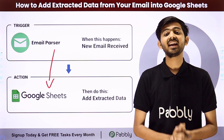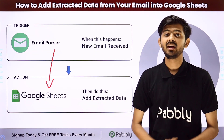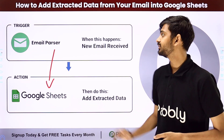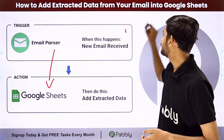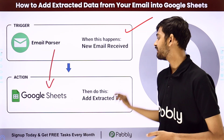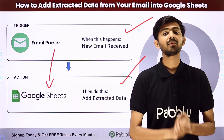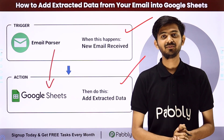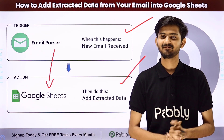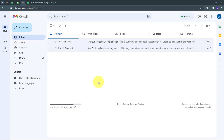In Pably Connect, I have to use trigger and action. In the trigger application, I'm going to use email parser. In the action application, I'm going to use Google Sheets. Let me take you to my computer screen. Today we are going to see how we can add extracted data from emails into Google Sheets.